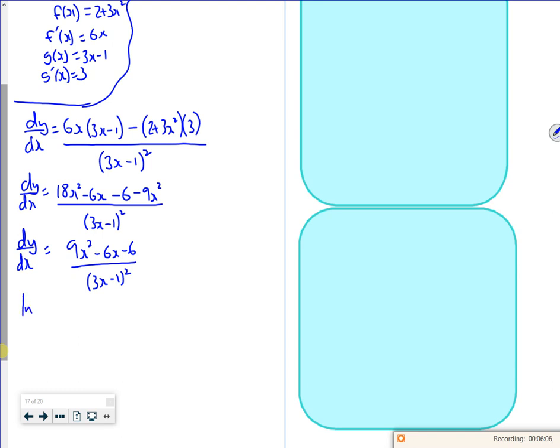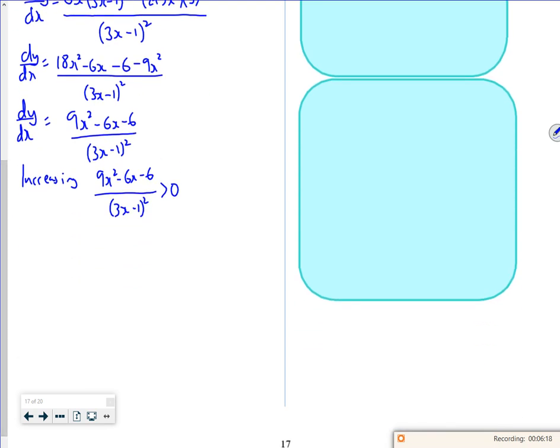Right, so we know that it's increasing when 9x squared minus 6x minus 6 all over 3x minus 1 squared is greater than 0. If I put that in the calculator, it's not ideal, but it gives me roots as 1 plus or minus root 7 over 3. So I've got a quadratic inequality when I'm looking above.